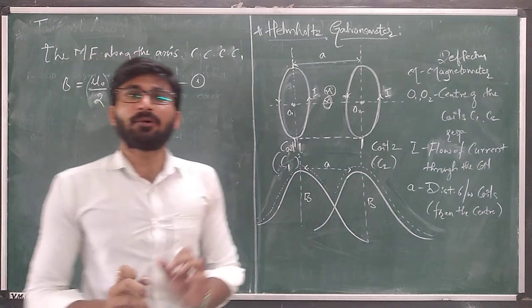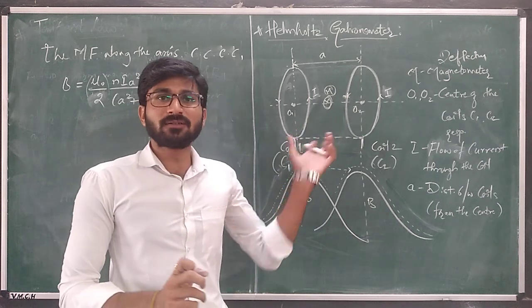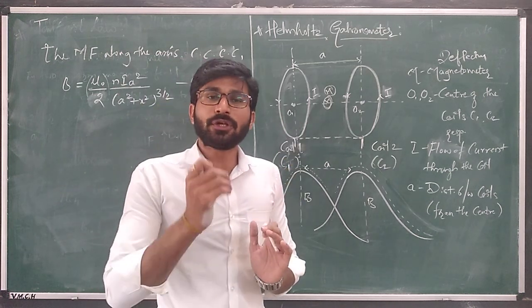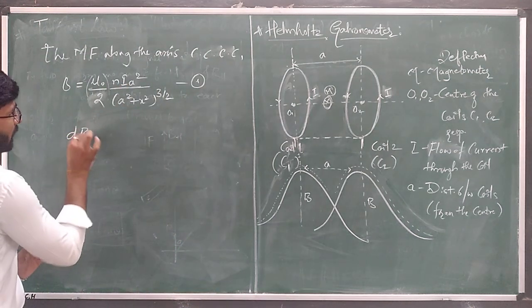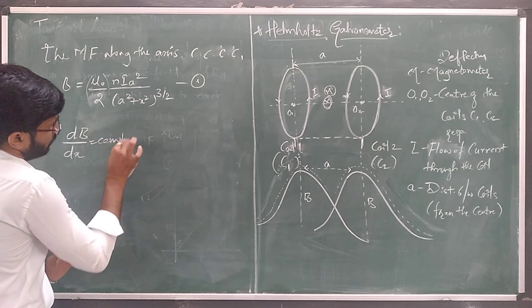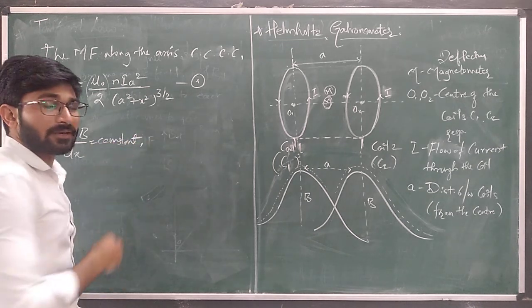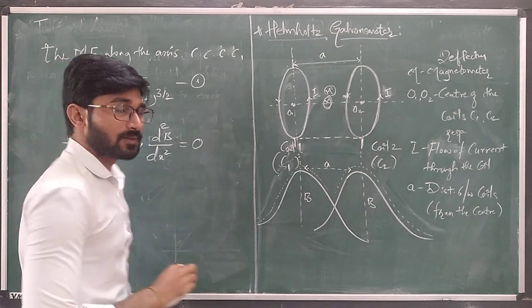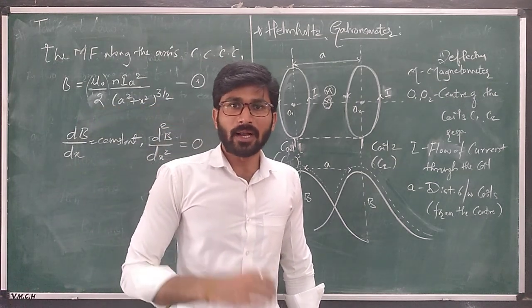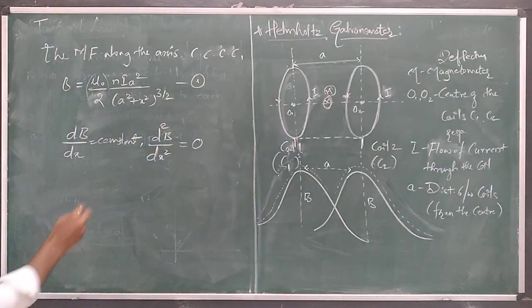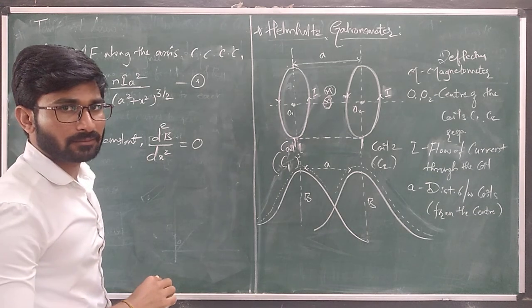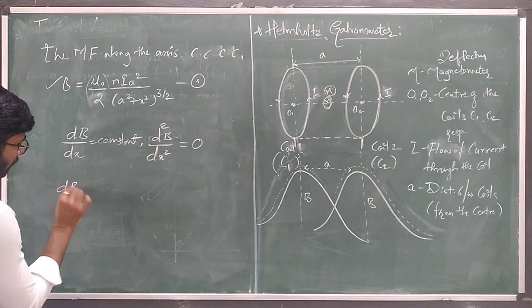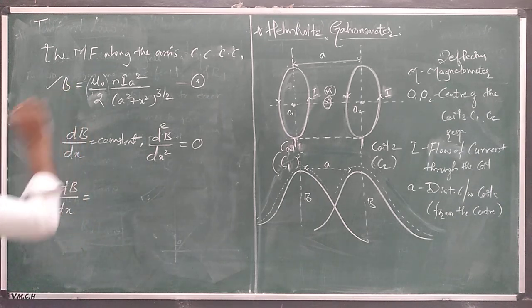We need to apply the condition for a uniform magnetic field. For a uniform field, dB/dx must be constant, which means d²B/dx² equals zero. Starting from the expression for the magnetic field along the axis of the current-carrying circular coil, we differentiate with respect to x.